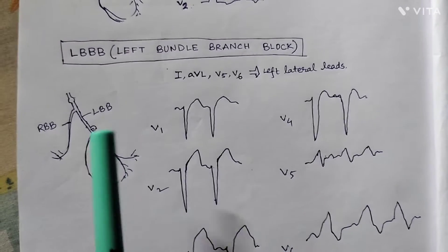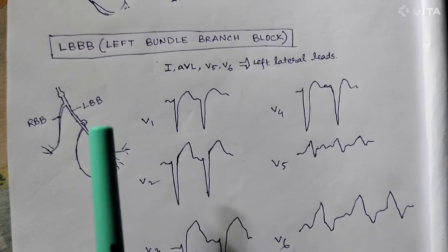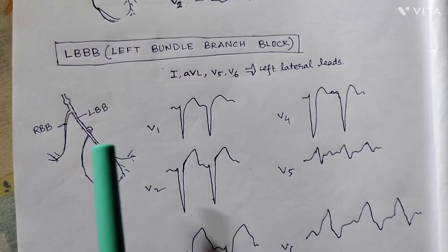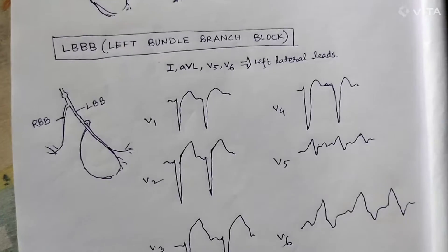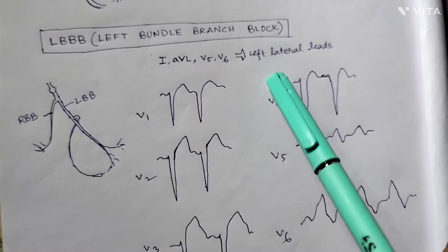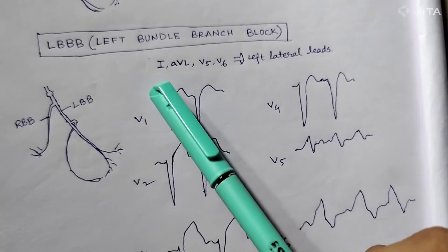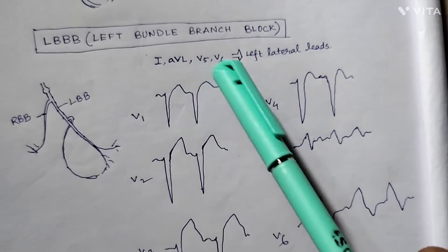This delayed left ventricular depolarization leads to a characteristic finding in the ECG, which we will discuss in this video. The left lateral leads are represented by lead I, AVL, V5, and V6.